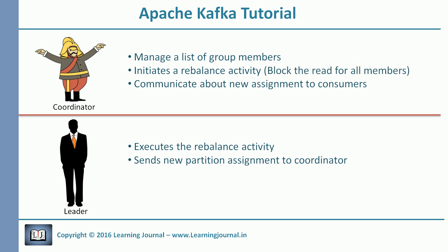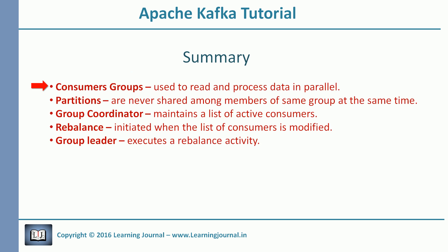Let's summarize quickly. Consumer groups are used to read and process data in parallel. To prevent duplicate reads in a group, Kafka does not allow more than one consumer to read data from a single partition at the same time. A group coordinator maintains a list of active consumers. Every time the list of active consumers is modified, the coordinator orders a rebalance activity to the leader. The group leader executes the rebalance activity, which is nothing but assigning partitions to individual consumers.